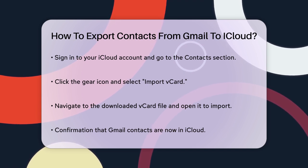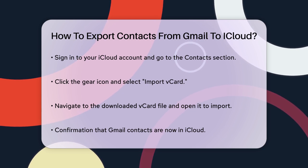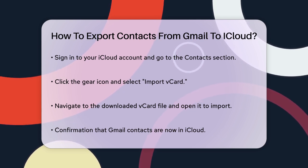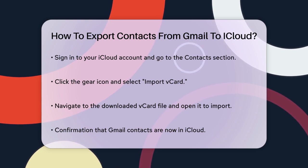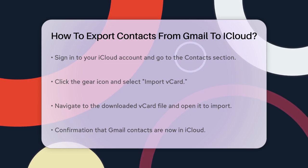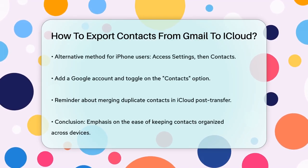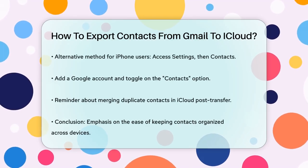If you're using an iPhone, there's another way to do this. Go to your iPhone's Settings app, click on Contacts, then Accounts, and Add Account. Choose Google and sign in with your Google account. Toggle on the Contacts option and click Save. This will sync your Gmail contacts with your iCloud.